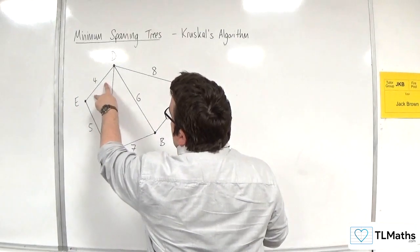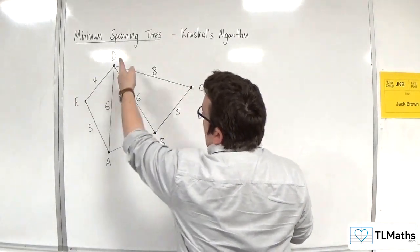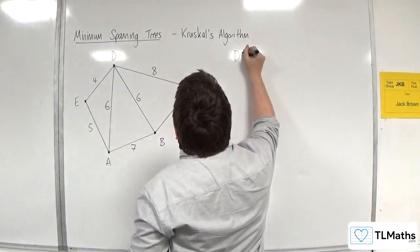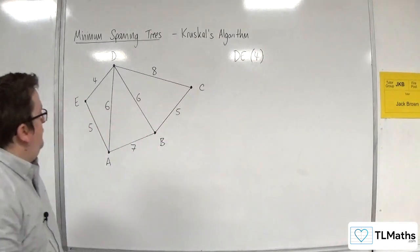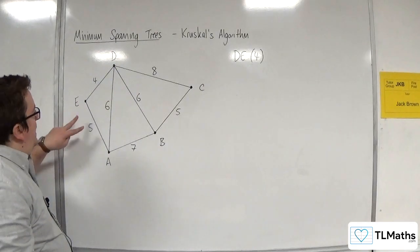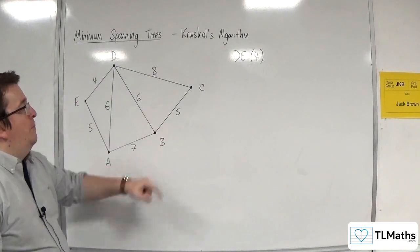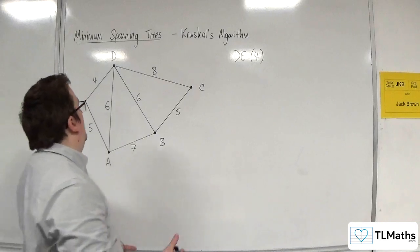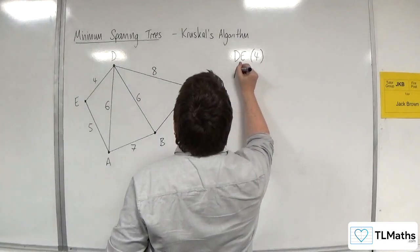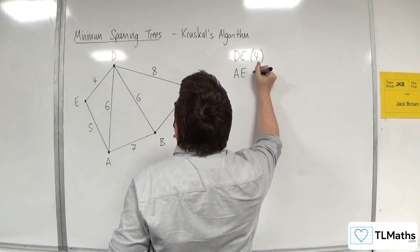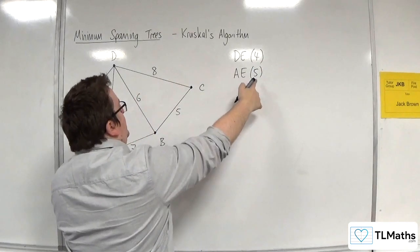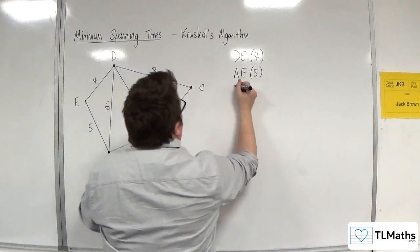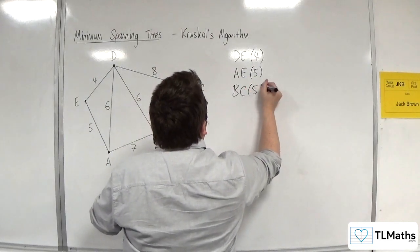So we want to go from the smallest to the largest based on their weight. So the first one is DE. I can write ED if I want, but I'm going to write it this way around. It's perfectly fine to write ED. And then next one is AE or we've got BC. It doesn't matter which one I write down first. So I could write down BC first or AE. It doesn't matter. And you can notice that I'm putting the weight in a bracket next to it. So you want to get into that habit.